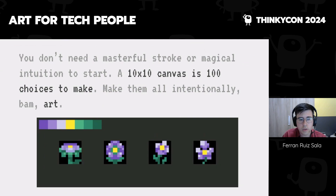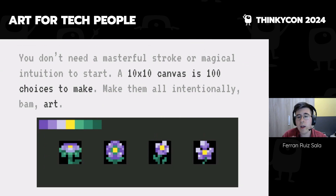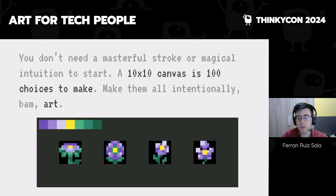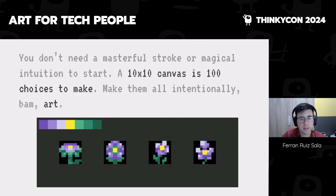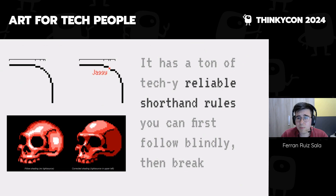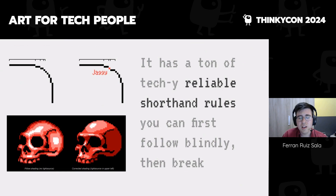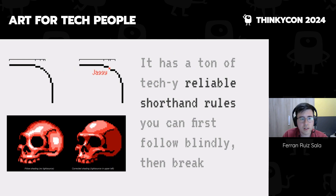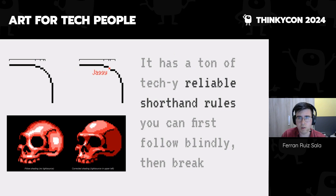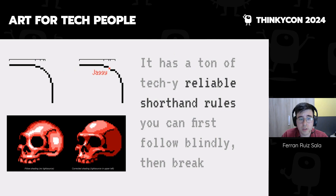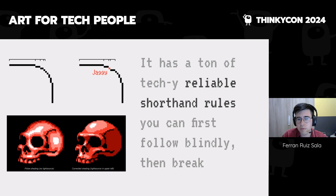That's what got me into pixel art. Pixel art also has an insane amount of reliable shorthand rules and terminology that makes it a lot closer to programming — things like 'this is a jaggy and jaggy lines are bad; you should avoid them.' Those are rules that are very useful to start with, and later you can break them. There's a lot of procedures already set up — you're standing on the shoulders of giants. There are many pre-made processes you can follow.